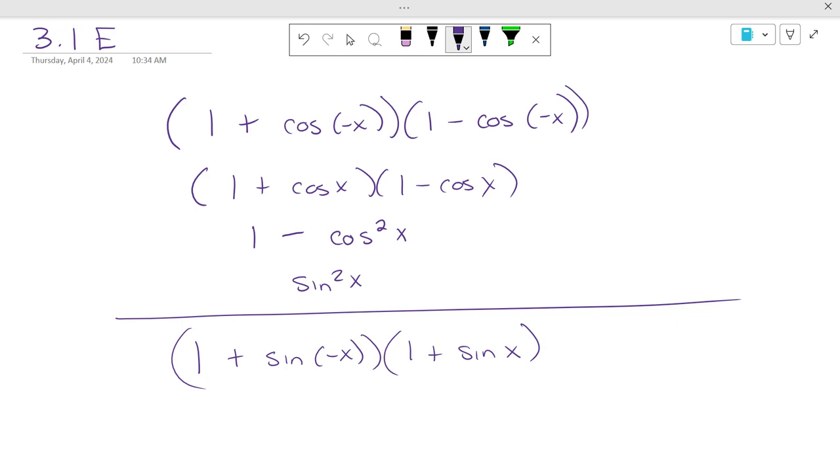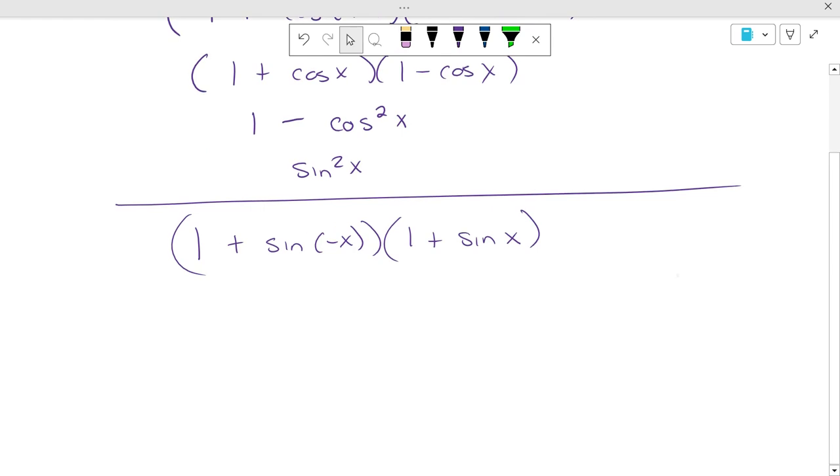What would I do if I had 1 plus sine of negative x times 1 plus sine of x? Get rid of the negative. So it's 1 minus sine of x times 1 plus sine of x.